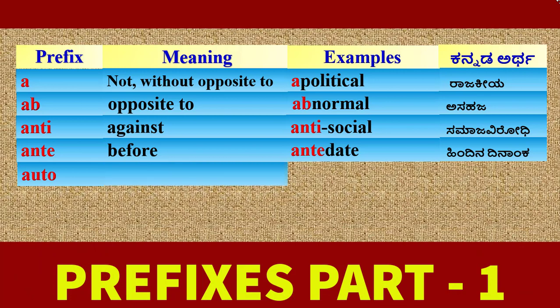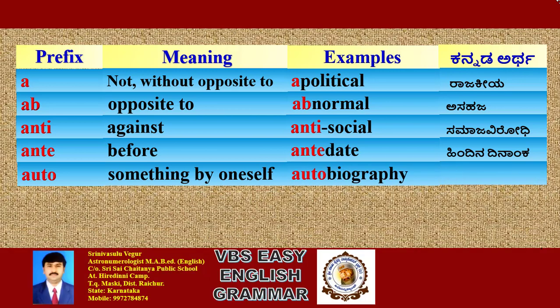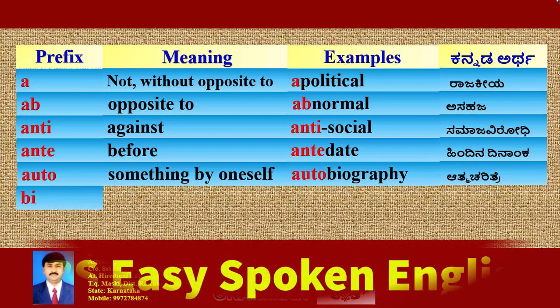Prefix 'Auto': its meaning is 'something by oneself'. Example: Autobiography. Kannada meaning: Atma Charitri.